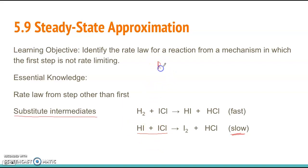So when you write out the rate law from that, it would look like this: rate equals K, HI first order, ICL first order.